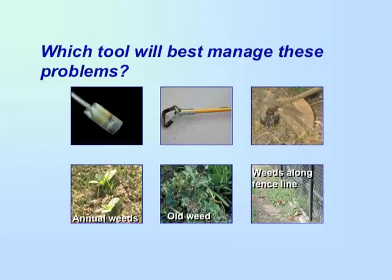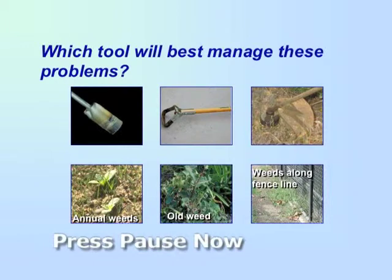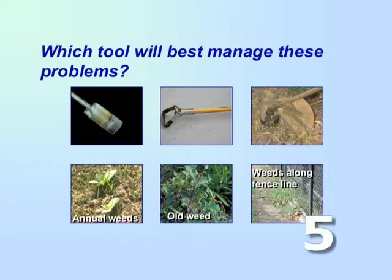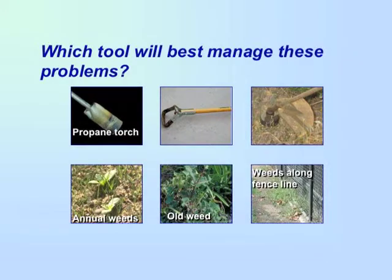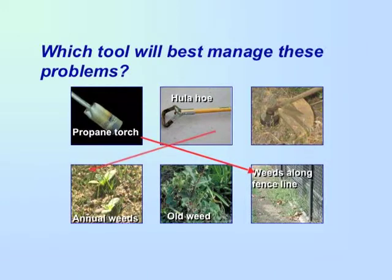Which tool will best manage these problems? Use a propane torch to manage weeds along a fence line. Use a hula hoe for annual weeds. And a weed trimmer to break older weeds.